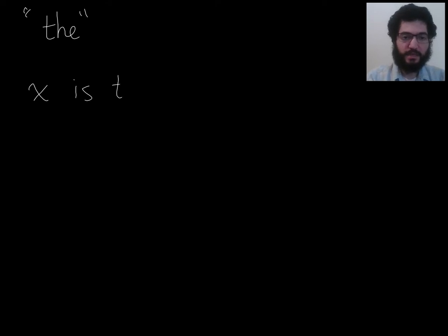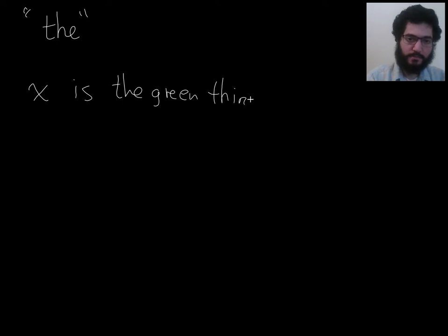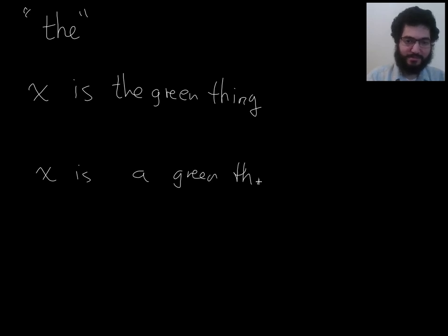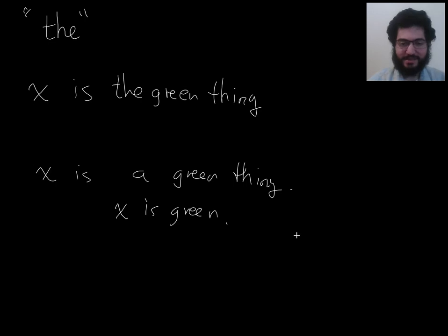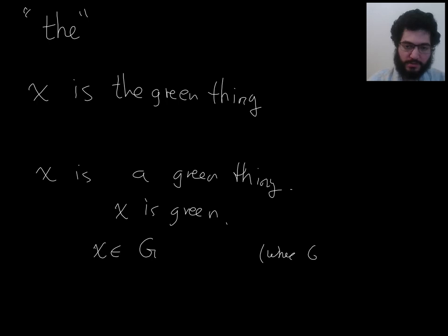Now I want to get into a conversation about the word 'the.' It can get surprisingly complicated when we try to pin down what it means when we use 'the' on a property. Let's say I say 'X is the green thing' versus saying 'X is a green thing.' When I say X is a green thing, that's just an obnoxious way to say X is green — I'm just saying X has the property of being green. You can think of it as saying X is in G, where G is the set of green things.